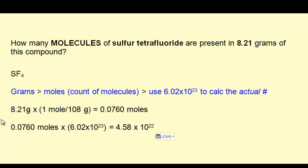The next step is to convert the moles to the actual number of molecules. To do that, multiply the moles by Avogadro's number, 6.02 times 10 to the 23rd. The actual number of molecules in the sample is 4.58 times 10 to the 22nd.